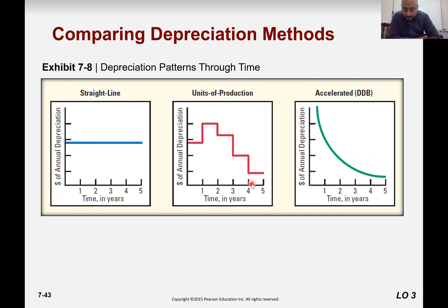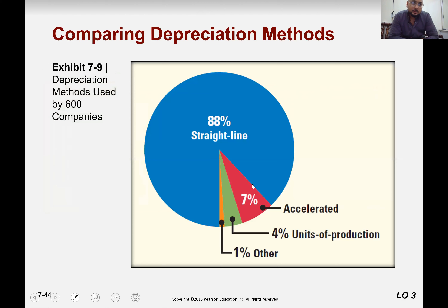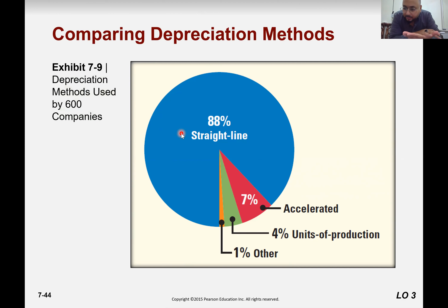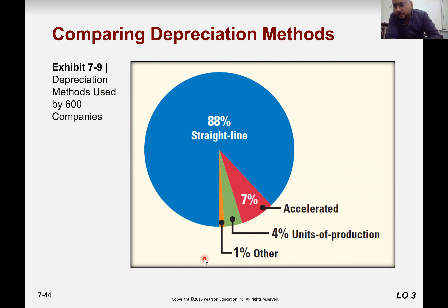Comparing 600 companies in the US: 88 percent are using the straight-line method because it smooths out earnings and depreciation every year. Seven percent are using the accelerated method, four percent are using the unit of production method, and only one percent are using different methods which are more advanced and not covered here.